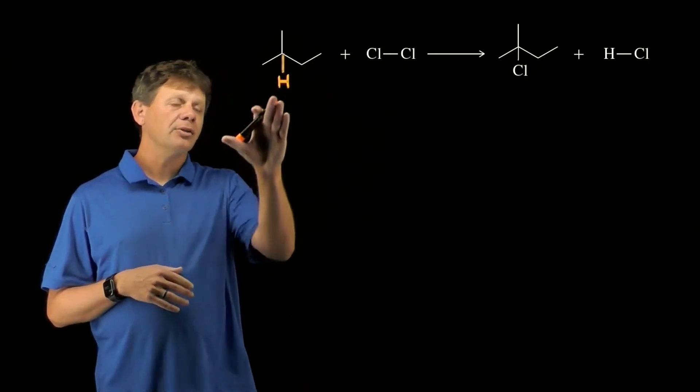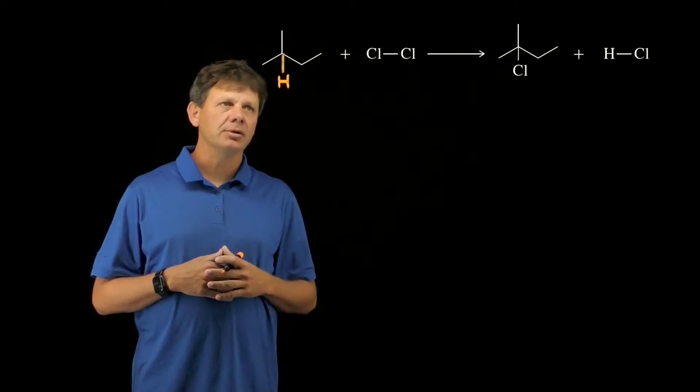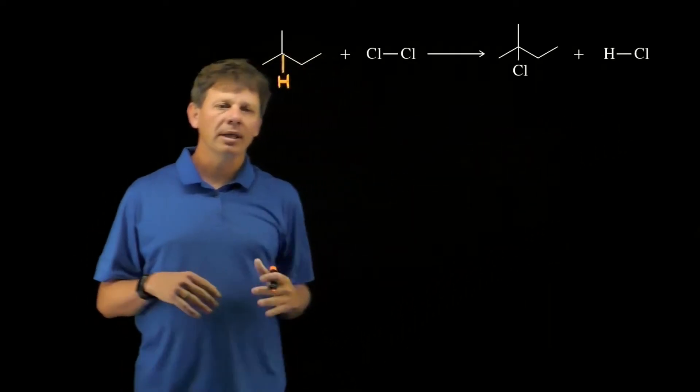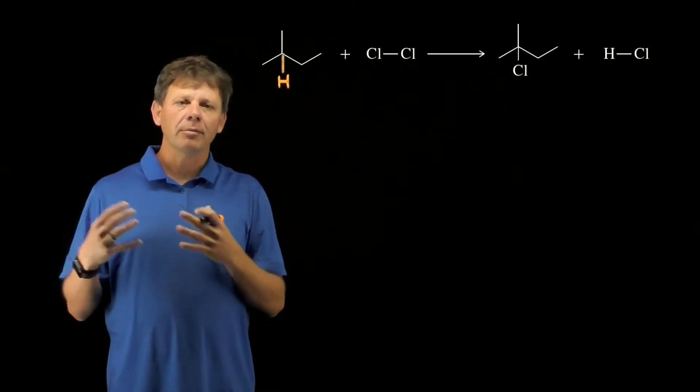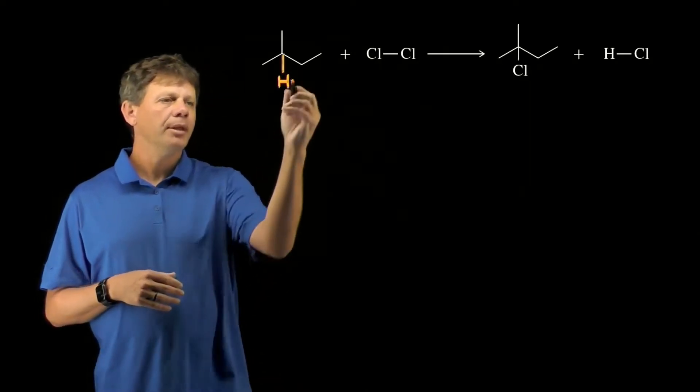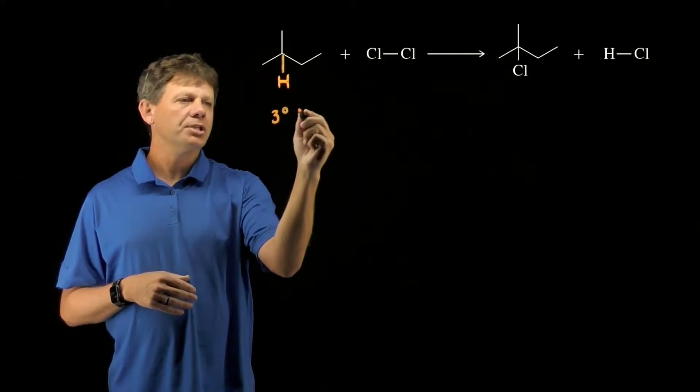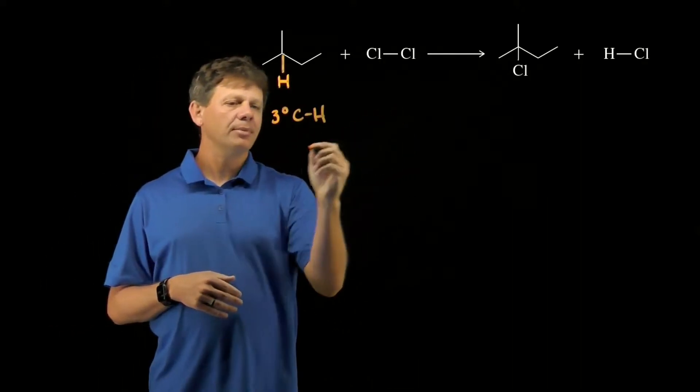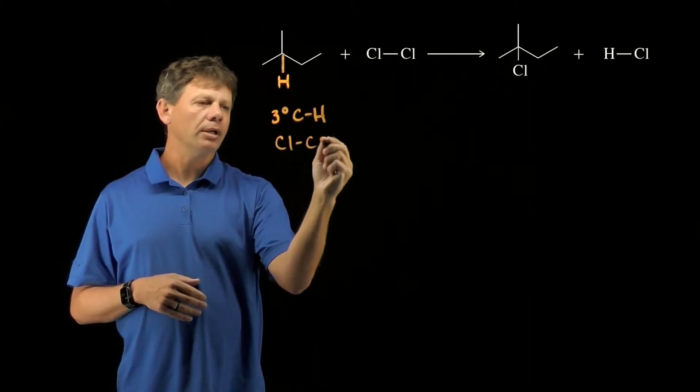Let's start by calculating delta H using bond association energies. For that we're going to look at the bonds broken and the bonds formed and compare the energies from the bond association energy table. You'll note that we're breaking a tertiary C-H bond on the left side of the reaction while at the same time breaking a chlorine-chlorine sigma bond.